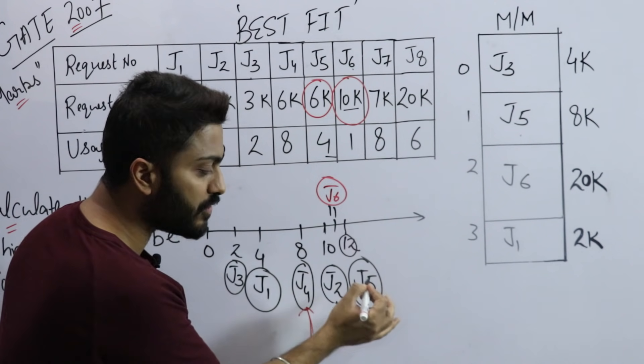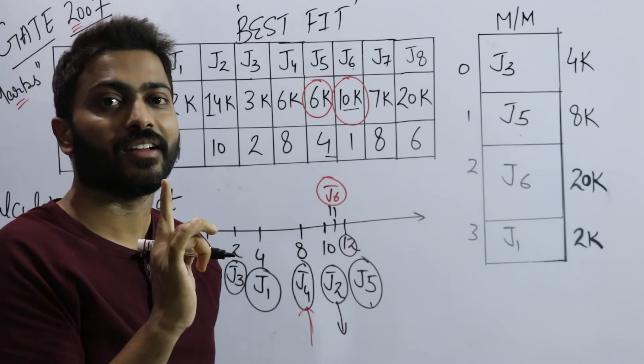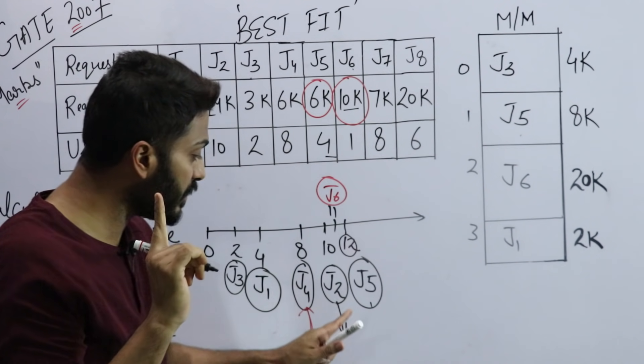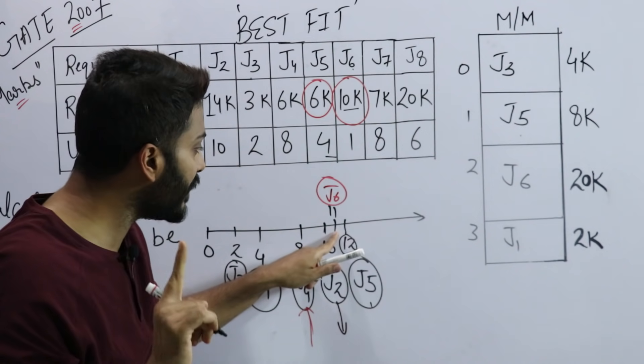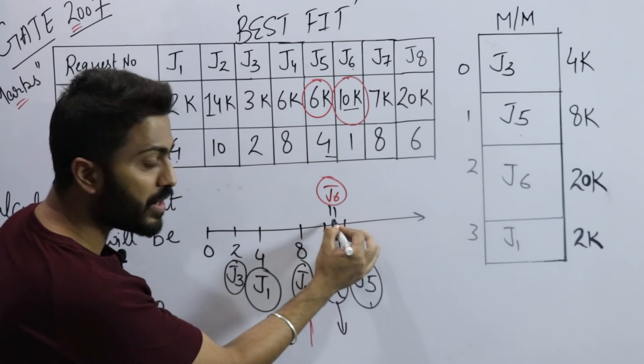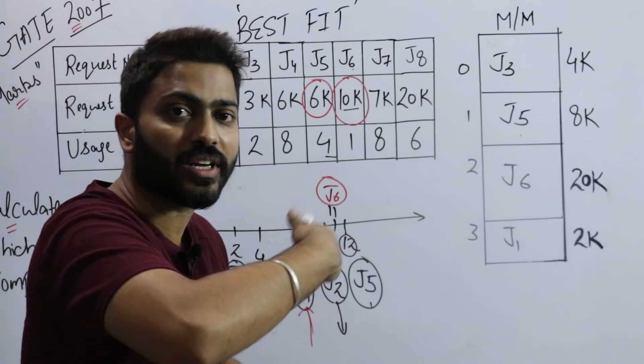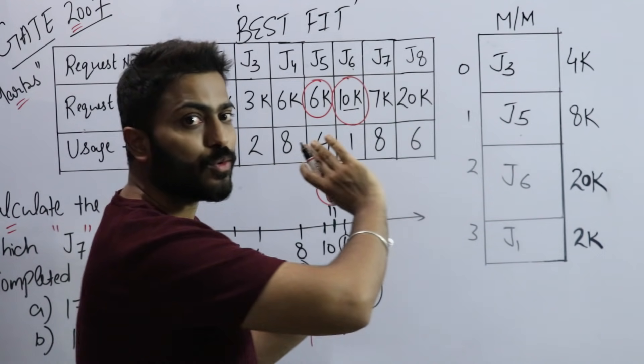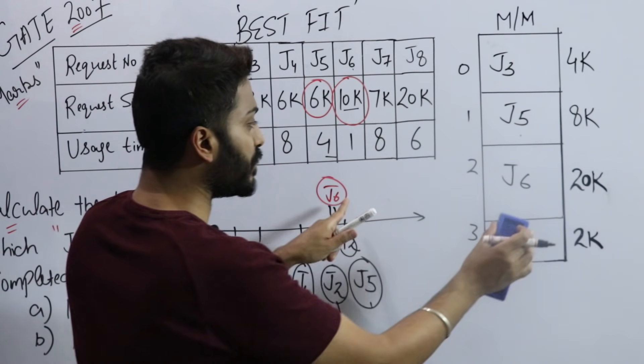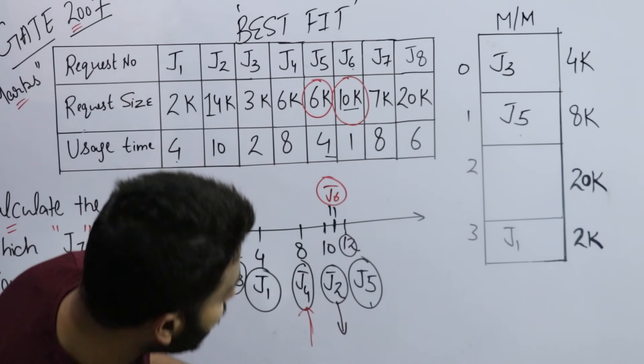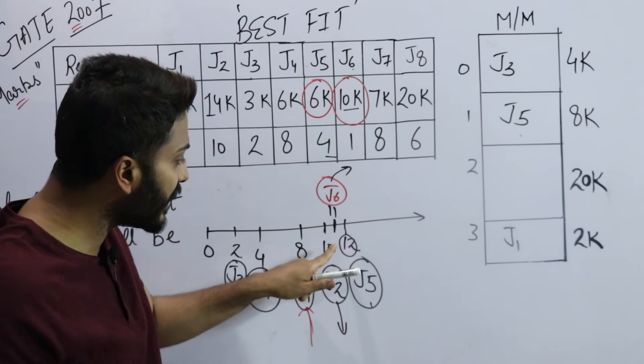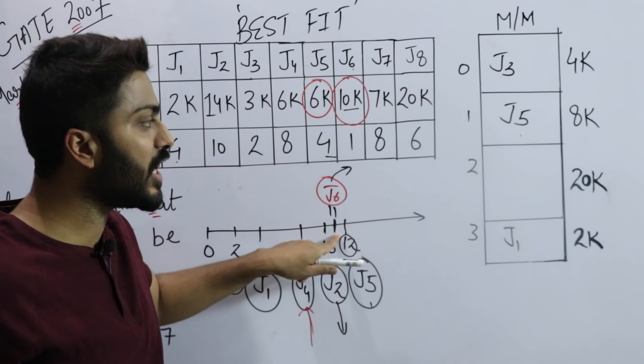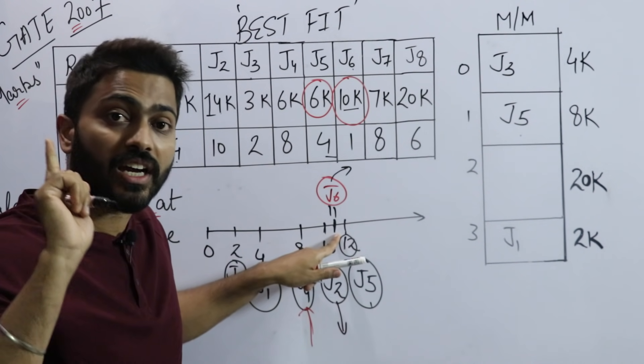If you place it here according to best fit, it should go here, but to place it here, J5 needs to exit. J5 is exiting at time 12 - when time reaches 12, J5 will exit. But this is the trick in this question. Many students will remove J5 at time 12 and then place J7.